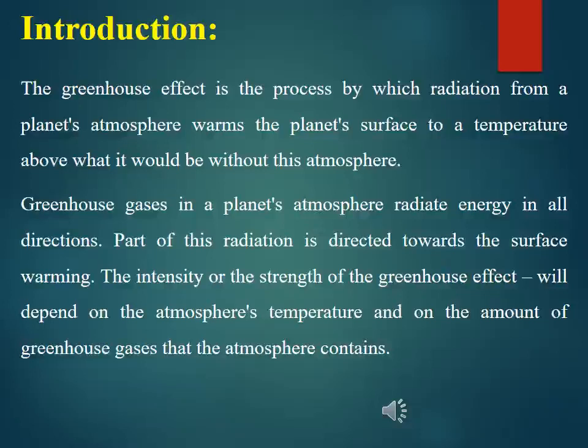The greenhouse effect is the process by which radiation from a planet's atmosphere warms the planet surface to a temperature above what it would be without this atmosphere. Greenhouse gases in a planet's atmosphere radiate energy in all directions; part of this radiation is directed towards the surface, warming it. The intensity or strength of the greenhouse effect depends on the atmosphere's temperature and on the amount of greenhouse gases the atmosphere contains.